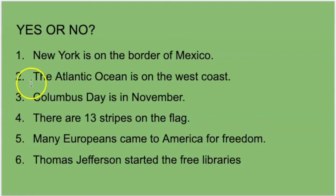Here we go with the answers. Number one, New York is on the border of Mexico? No — California is on the border of Mexico. The Atlantic Ocean is on the West Coast? No — the Atlantic Ocean is on the East Coast. Columbus Day is in November? No — Columbus Day is in October. There are 13 stripes on the flag? Yes — 13 stripes for 13 original colonies. Number five, many Europeans came to America for freedom? Yes, they did. Number six, Thomas Jefferson started the free libraries? No — that was Benjamin Franklin.